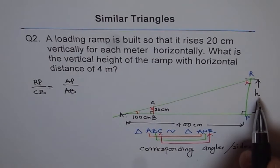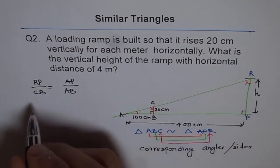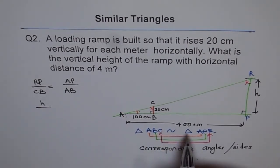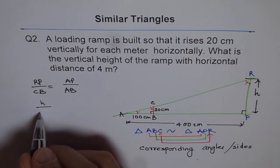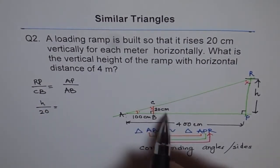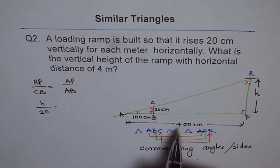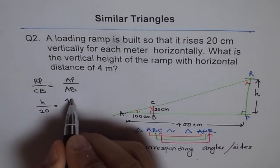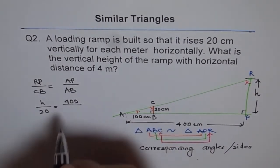Now let's plug in the values which we know. RP is the variable height H, which we need to find. H over CB. CB is 20. So we are finding height in centimeters. We converted all our units in centimeters. Now AP is 400 centimeters and AB is 100.